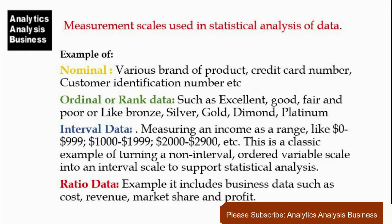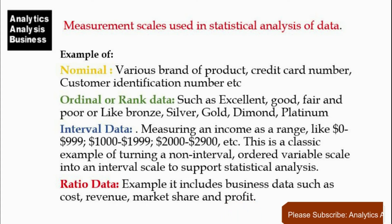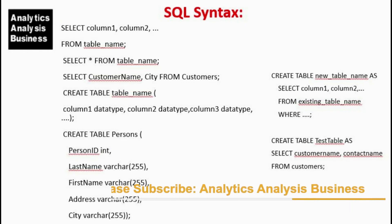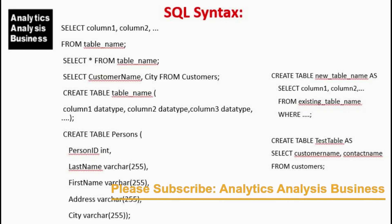Ratio data — it is the highest level of measurement that has all the desirable properties and allows you to perform all basic arithmetic operations. Data measured on a ratio scale have a fixed zero point. Examples include business data such as cost, revenue, market share, and profit. As you are selecting variables for analytical activities, I will explain how you can select variables and create tables in SQL, SAS, and Python. If the data is small, you can analyze it in Excel as well.